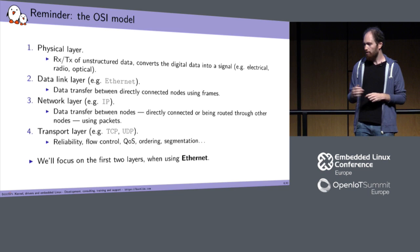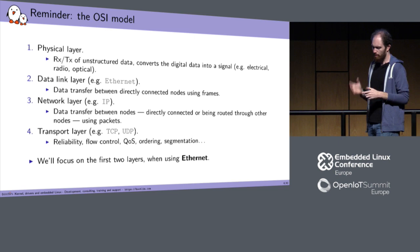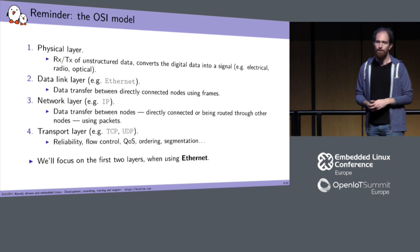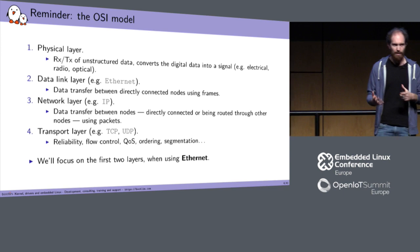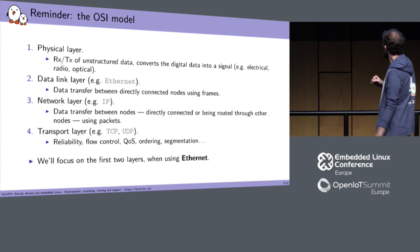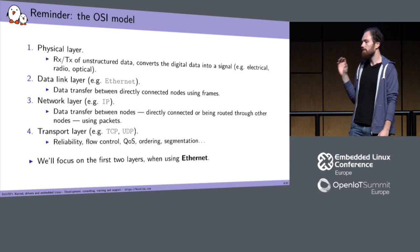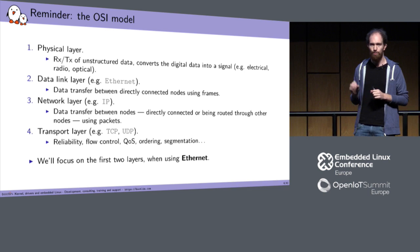On top of that is L4, the transport layer. The two main examples are TCP and UDP, which add extra capabilities such as reliability, ordering, and flow control. Today, while speaking about Ethernet, we will focus only on the first two layers — the physical layer and the data link layer — the two lowest layers of the OSI model.